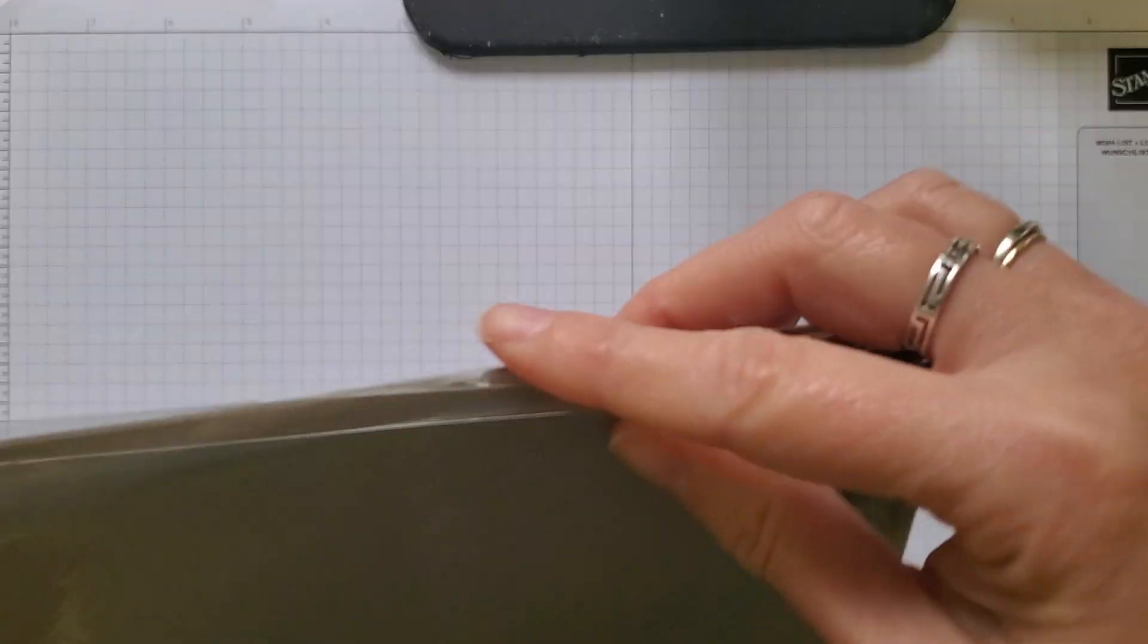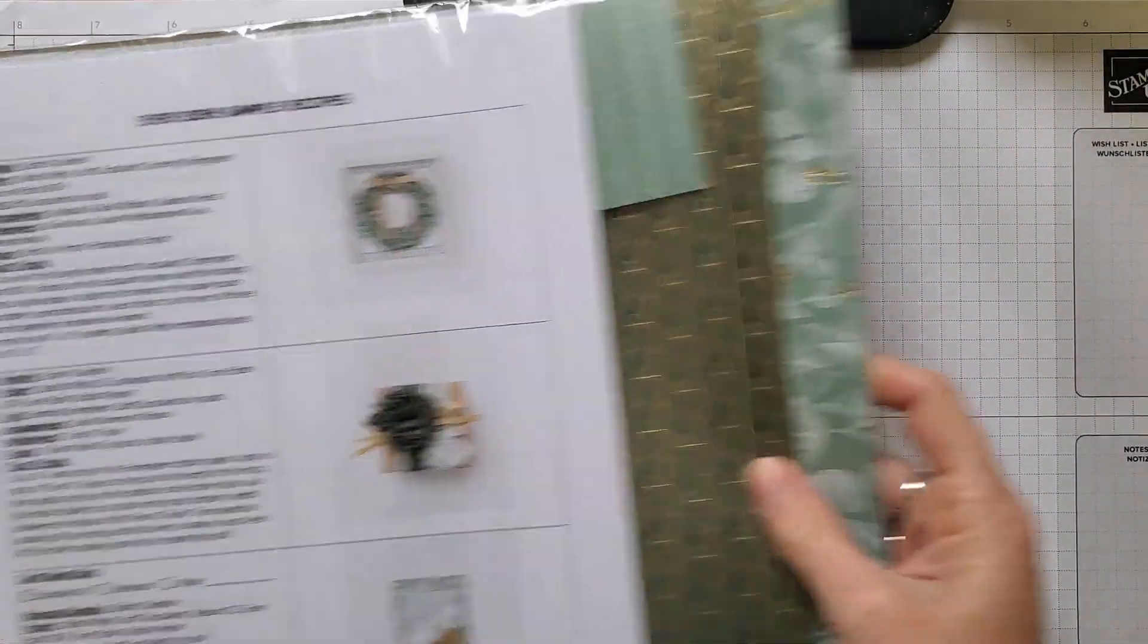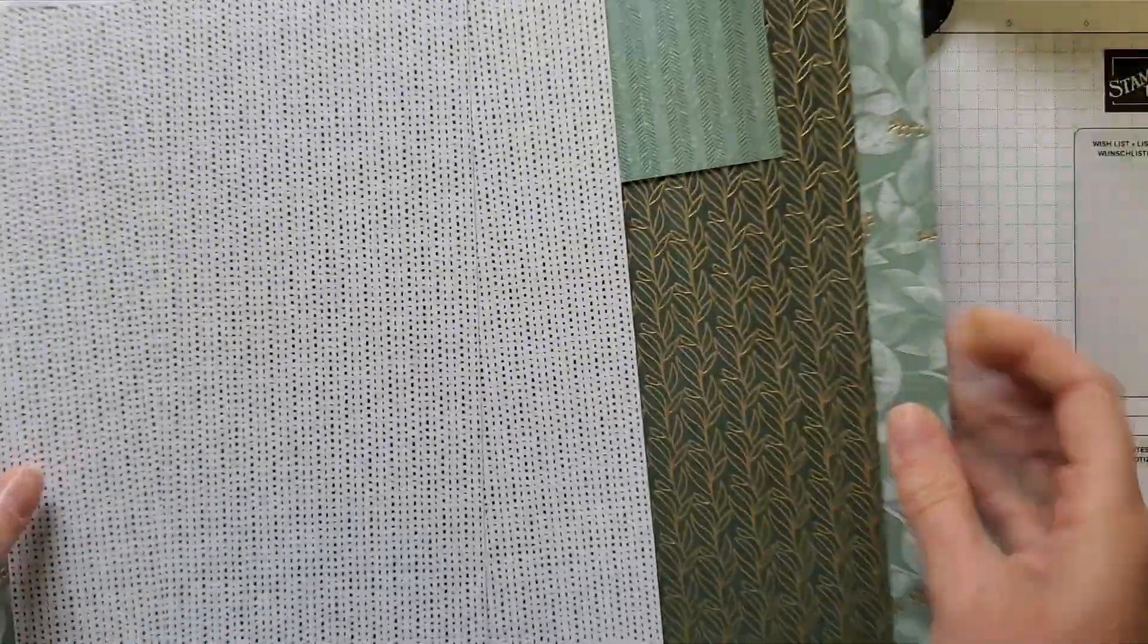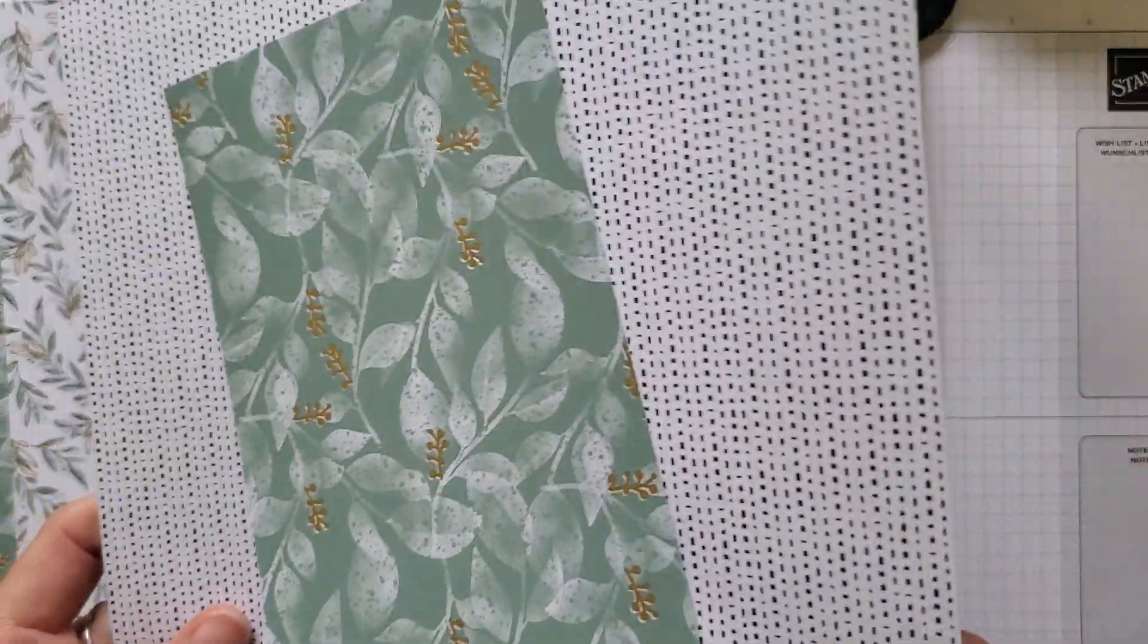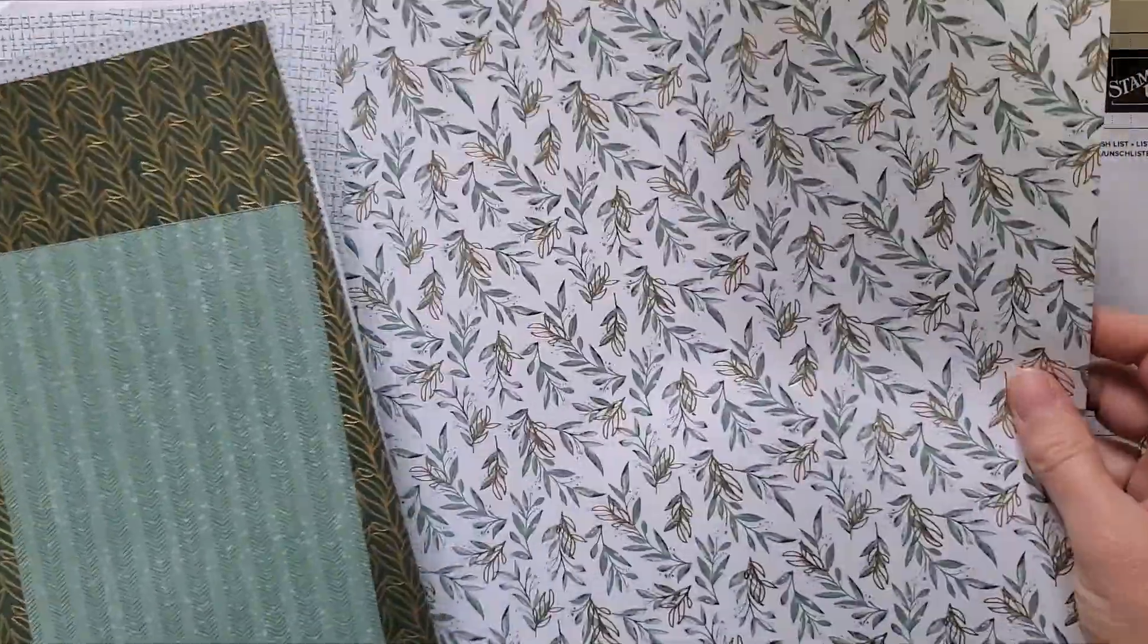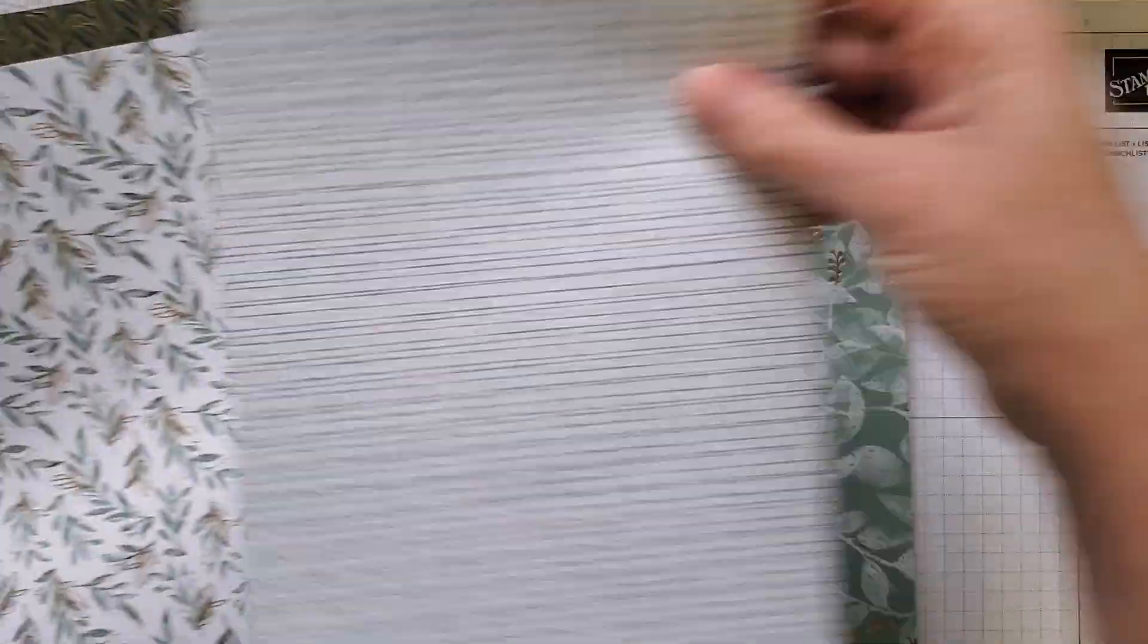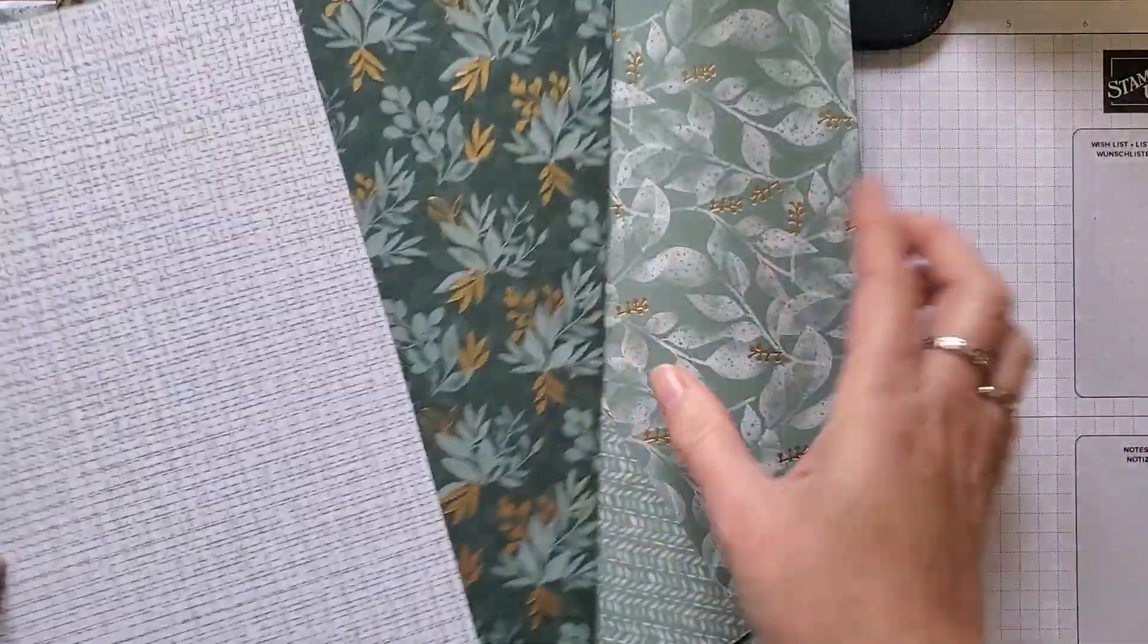And then the last part of the bundle, or the available product, this again is while supplies last, guys. So if you like it, get it ASAP. But you can see it's specialty paper. It's got some gold foiling in it. You can see just some different patterns here that I have because I've already cut it up and started playing with it.